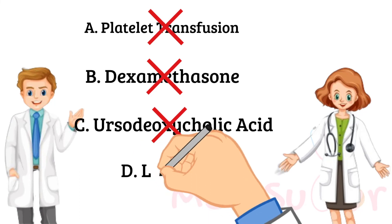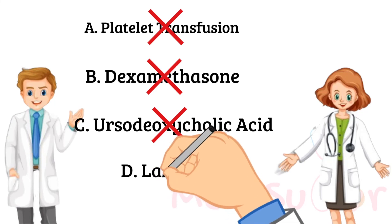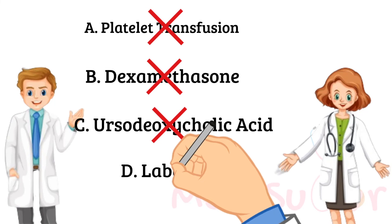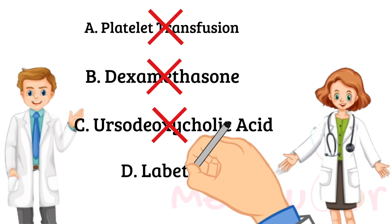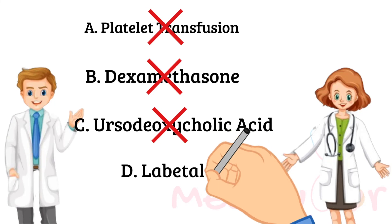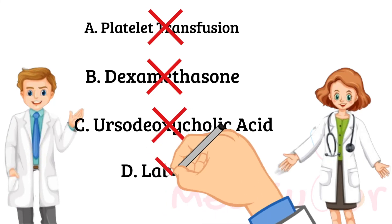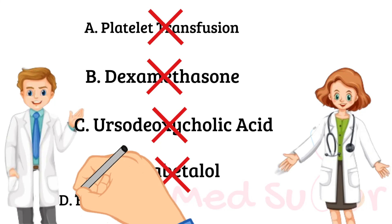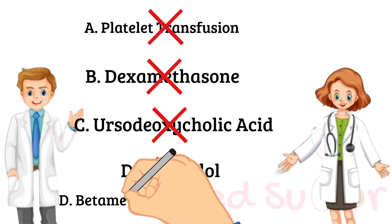D says labetalol. Labetalol is the antihypertensive of choice in pregnancy in general and especially with preeclampsia. However, even though this woman has hypertension, treating the blood pressure solely while ignoring the other features — HELLP syndrome is caused by the placenta. If you remove the placenta, this woman is going to improve, which means I have to deliver. Simply giving symptomatic treatment — platelets for low platelets or antihypertensive for high blood pressure — will not treat the condition. She's still in danger because of the thrombosis taking place inside her vessels.